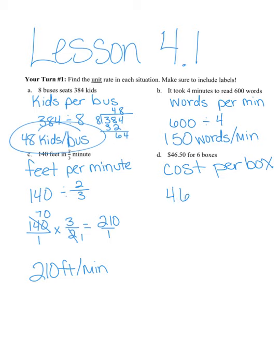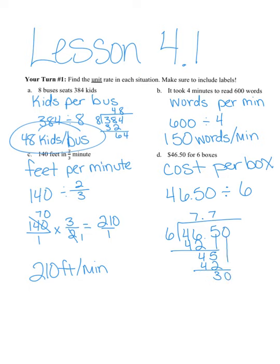My cost is 46.50 divided by 6. 6 goes into 46 seven times. 6 goes into 30 five times, and it comes out evenly. So $7.75 is the cost per box.